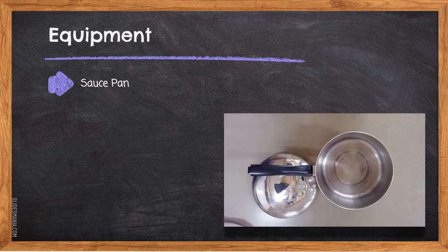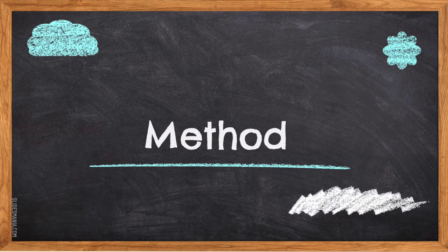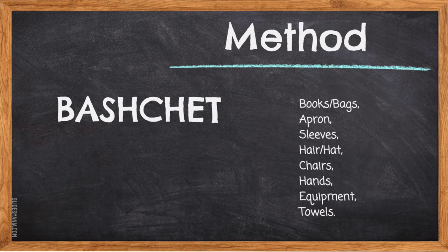Also a saucepan. Method: BECHET stands for the beginning steps you need to do at the start of your lab. B stands for books and bags — they should be away at the back of the classroom or under your table. A stands for apron, which you need to put on to protect your clothing. S stands for sleeves — roll them up past your elbows. H stands for long hair that needs to be tied back, or hats that need to be removed.